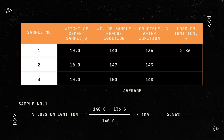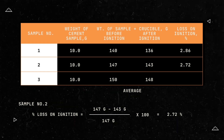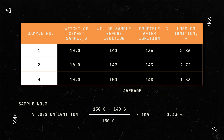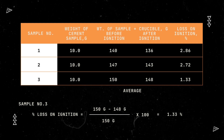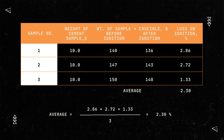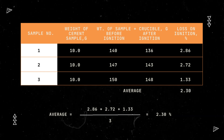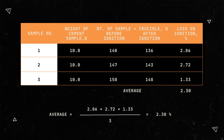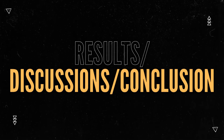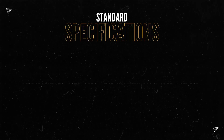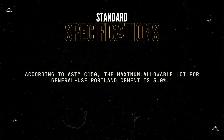Here is our tabulated data and the calculated percent loss on ignition from samples 1 to 3. We averaged the results from samples 1 to 3 and obtained a 2.30% loss on ignition.